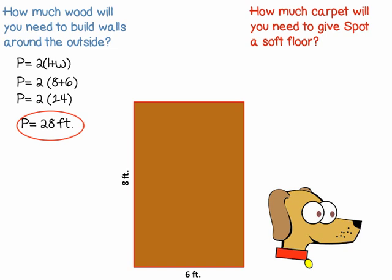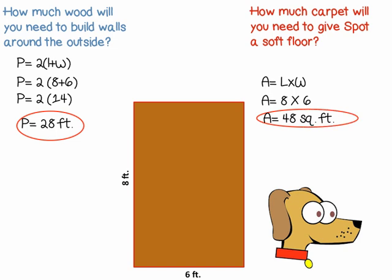Now, how much carpet will we need in order to give Spot a soft floor? Our formula for area is length times width. So, area equals 8 times 6, or 48 square feet. We are going to need 48 square feet of carpet in order to give Spot a soft floor.